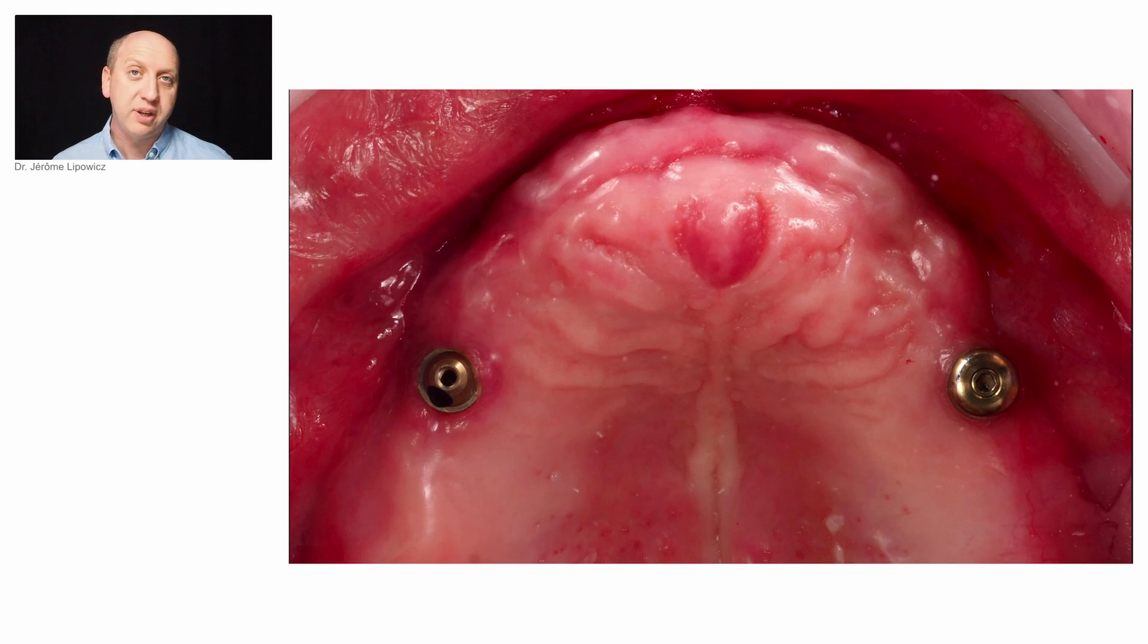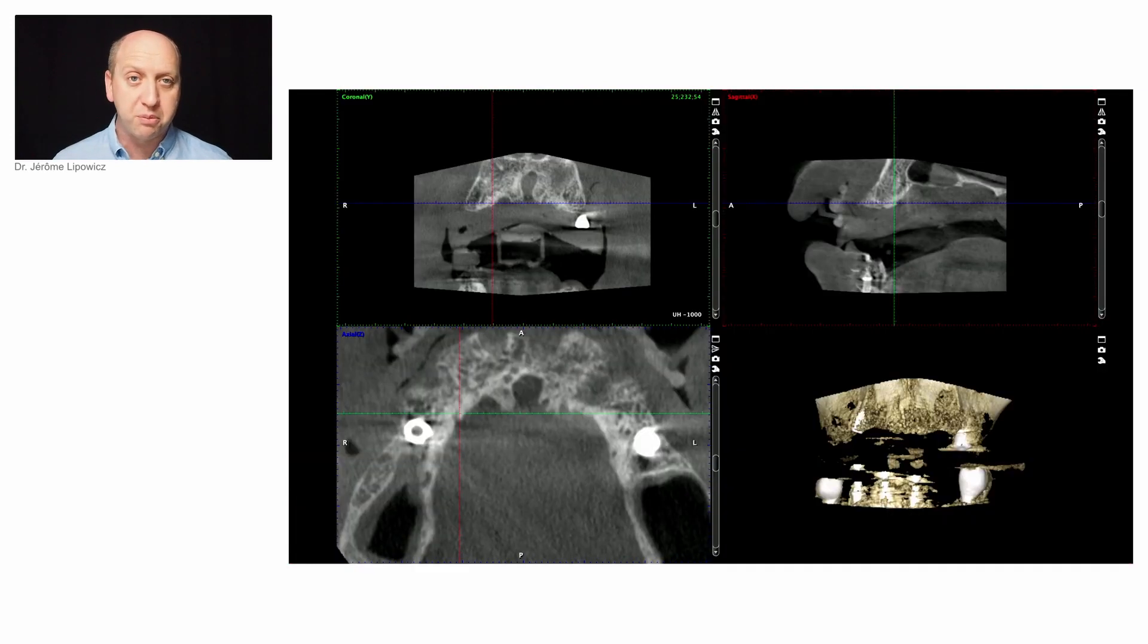One recurrent issue in clinical cases where the purpose is to make a full arch bridge on implants is either the presence of metal on all the residual teeth to be extracted or, on the contrary, the lack of fiduciary marker. In these two situations, reading cone beam CT can be very hard.